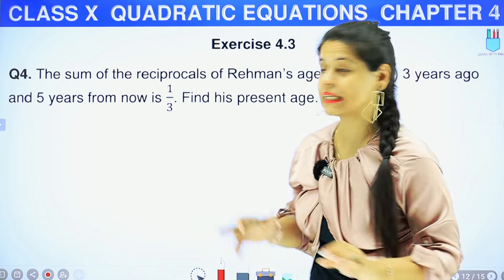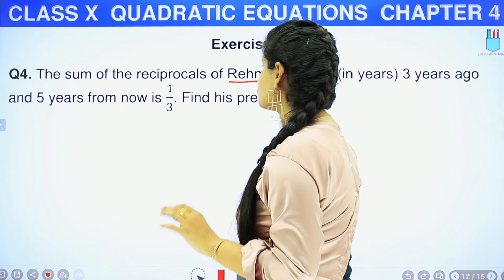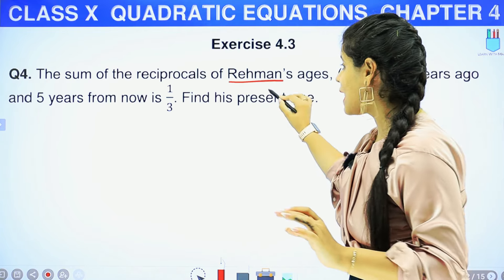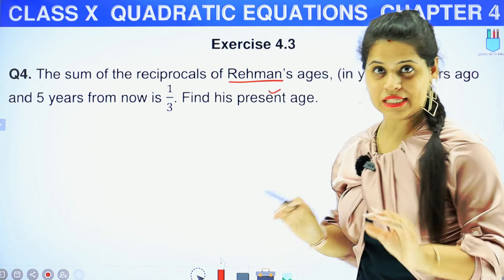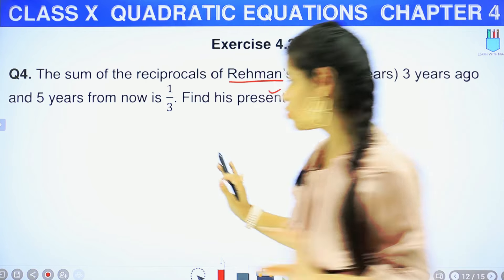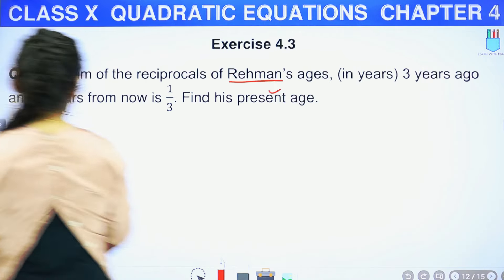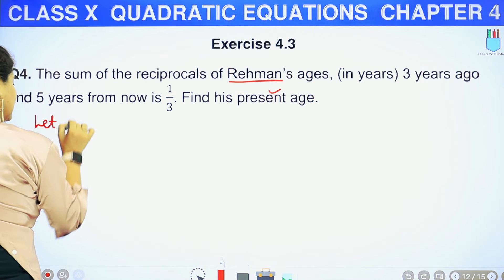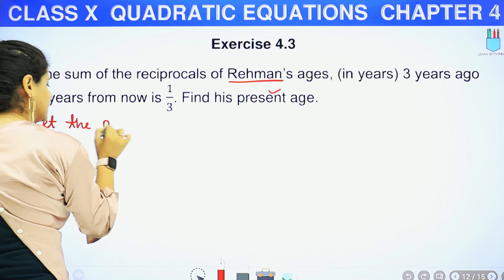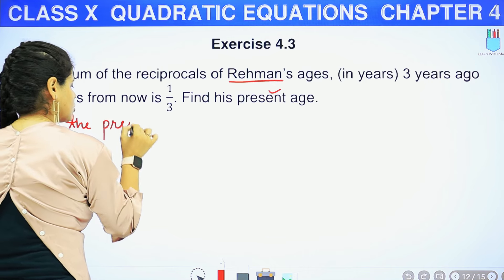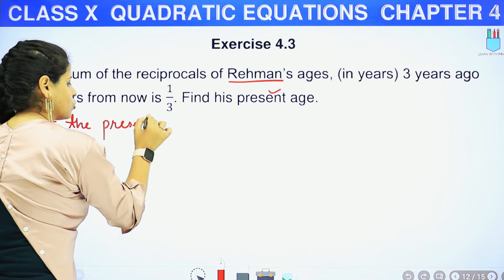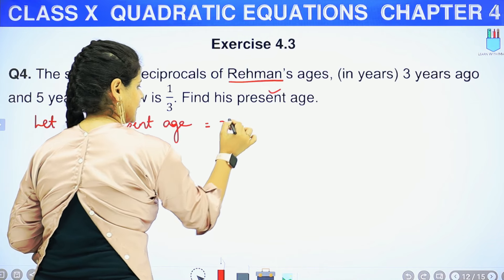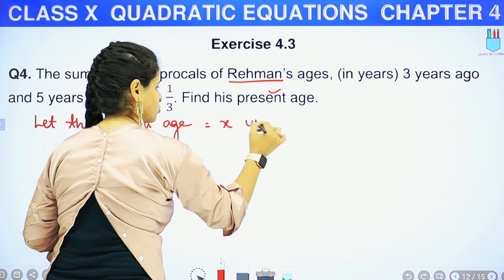So what do we have given here? One guy is talking about his age. What is his present age? एक चीज़ क्लियर है, जो भी निकालना होता है उसको X let कर लेते हैं. So we'll start with: let the present age be X years. Present age को हम X let करेंगे.